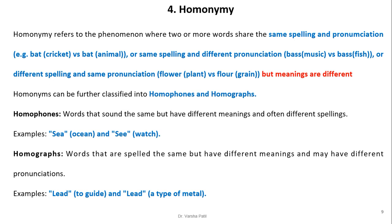Homonymy refers to the phenomenon where two or more words share the same spelling and pronunciation — for example, 'bat' meaning a cricket bat or an animal — or the same spelling with different pronunciation, such as 'bass' for music versus 'bass' for fish, or different spelling with the same pronunciation, such as 'flower' for a plant and 'flour' for grain. Homonyms can be classified into homophones and homographs. Homophones are words that sound the same but have different meanings and often different spellings, like 'flower' (f-l-o-w-e-r) and 'flour' (f-l-o-u-r), or 'sea' meaning ocean and 'see' meaning to watch.